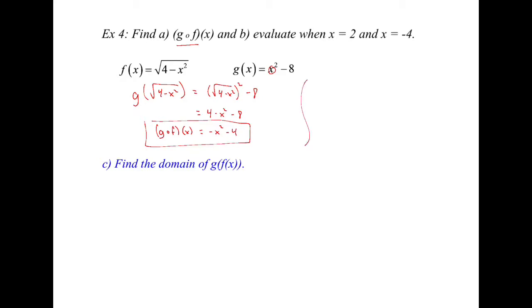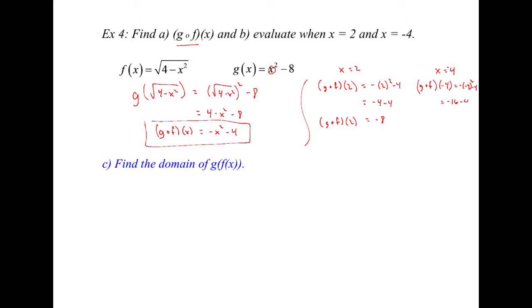Now we evaluate when x is 2 and x is negative 4. For x equals 2: g of f of 2 equals negative (2 squared) minus 4, which is negative 4 minus 4, equaling negative 8. So g of f of 2 is negative 8. Then for x equals negative 4: g of f of negative 4 equals the opposite of negative 4 squared minus 4, which is negative 16 minus 4. Everything seems correct given our composition of negative x squared minus 4.